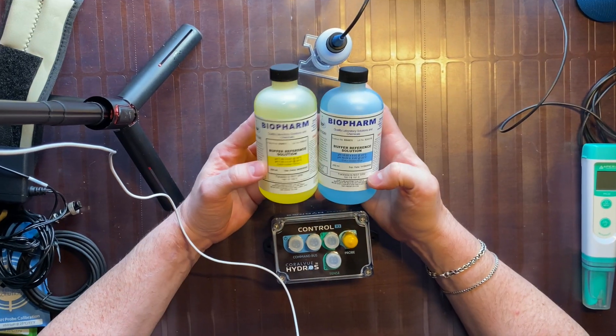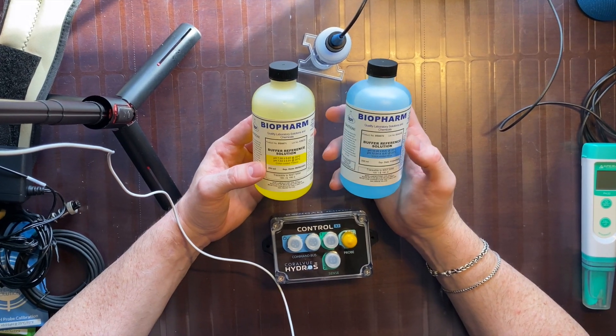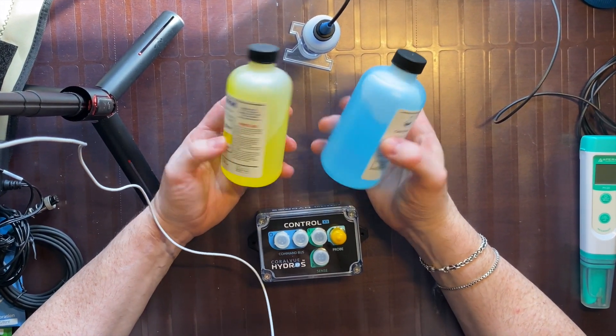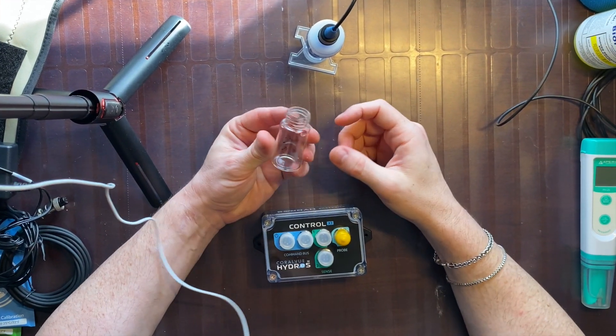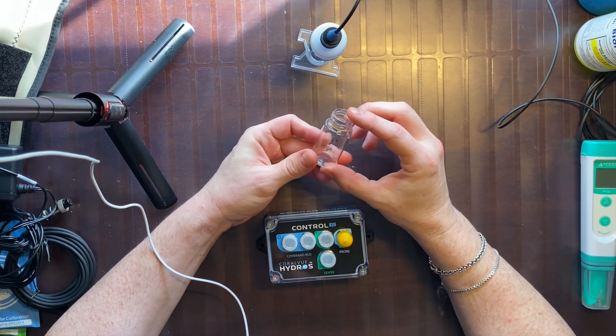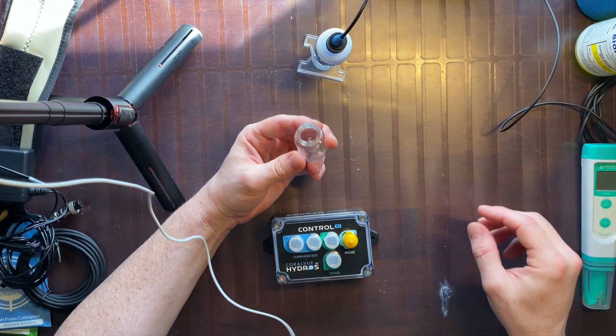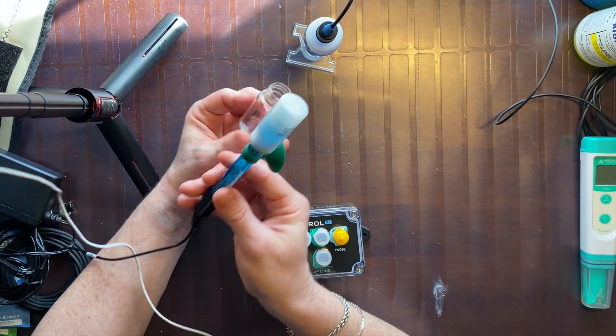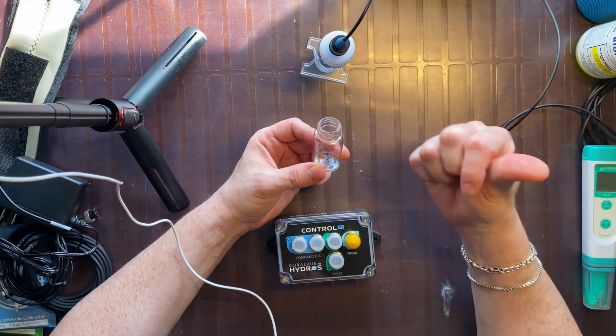I also purchased some pH calibration fluid on Amazon. So this is 250 milliliters of solution, and hopefully that should last a while. What I do is I just pour the solution into this little glass vial from my Red Sea Kits. It's perfect as far as the size of the probe goes. And I'll show you how I do my calibration in the sump.